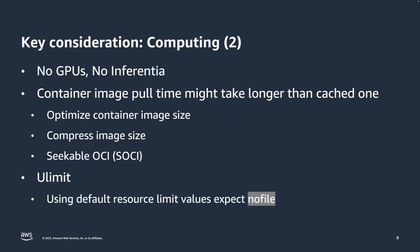On July 17th, a new feature was released leveraging Seekable OCI to accelerate ECS Fargate provisioning speed. Open-sourced by AWS, it enables containers to start without waiting for the entire container image to be downloaded. This enables applications to scale out quickly and reduces rolling-out time for application updates. The larger the container image size, the more effective this feature can be.